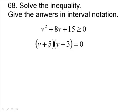Now, if V plus 5 equals 0, then V would be negative 5. If V plus 3 equals 0, then V would be minus 3. So we're coming up with negative 5 and negative 3 for V.